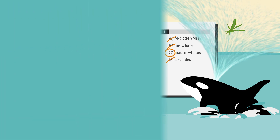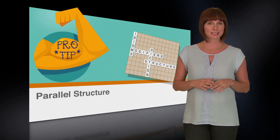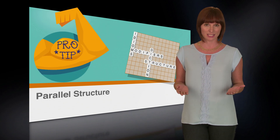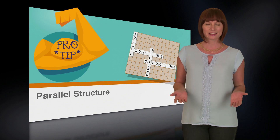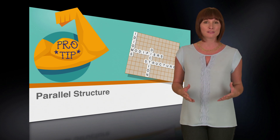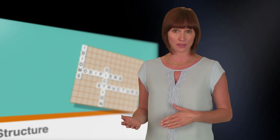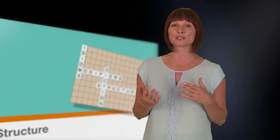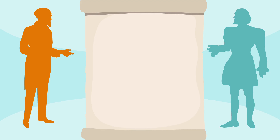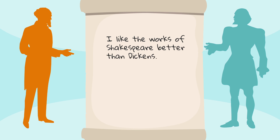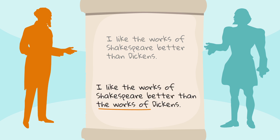Nice work. Here's a pro tip for you: when a sentence is comparing two similar things — say two artists, authors, or poets — this is a red flag that the comparison of like things is being tested. Make sure that the work of one of the artists or authors is being compared to the other person's work, and not the person themselves. A classic example is: I like the works of Shakespeare better than Dickens. This sentence incorrectly compares the works of Shakespeare to Dickens, not to Dickens' works. Instead, the sentence should say: I like the works of Shakespeare better than the works of Dickens.